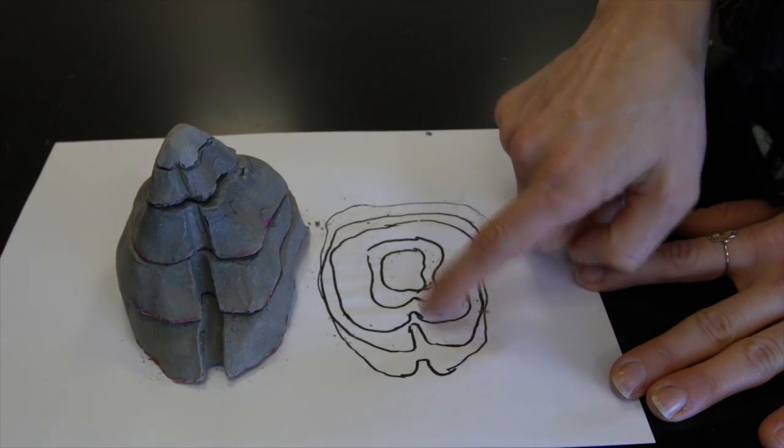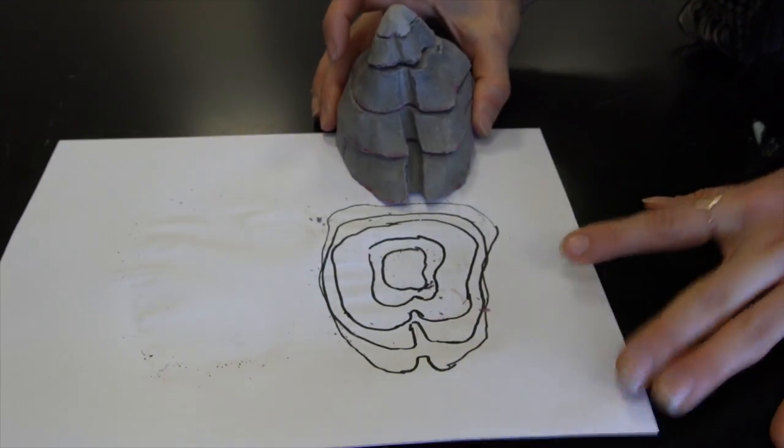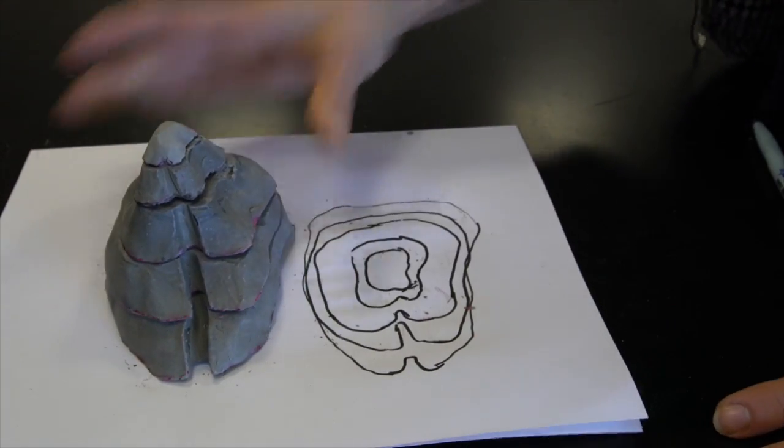So they all create a V shape, they all point uphill. And that answers our question. Thank you.